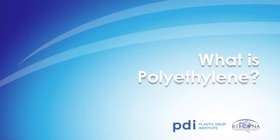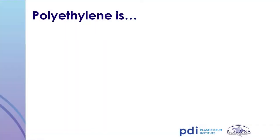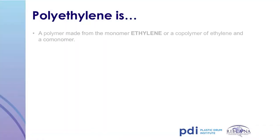What is polyethylene? Polyethylene is a polymer that is made from the monomer ethylene — the building block for the resin — which polymerizes and forms polyethylene.